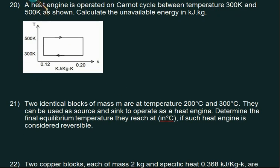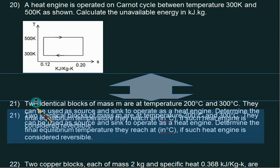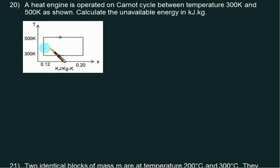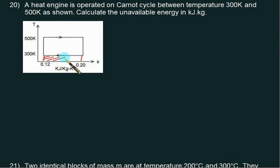We have a Carnot retention problem here. We are given a Carnot cycle operating from temperature source equal to 500 and sink equal to 300, and the change in entropy is also given. We want to calculate unavailable energy.